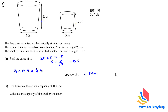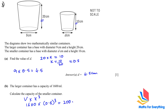Moving on to part b: the larger container has a capacity of 1600 milliliters. Calculate the capacity of the smaller container. This is a case of volume. Whenever you have volume you multiply by the scale factor cubed. So 1600 multiplied by 0.5 to the power of 3 gives the capacity of the smaller container, which is 200 milliliters.